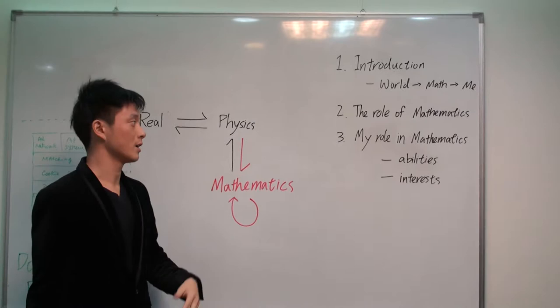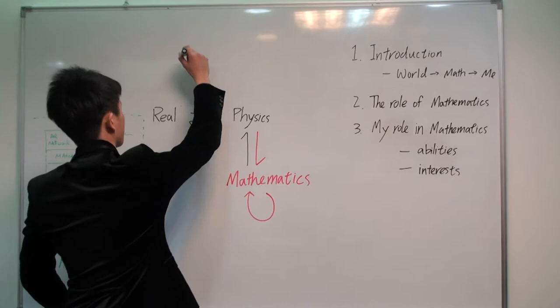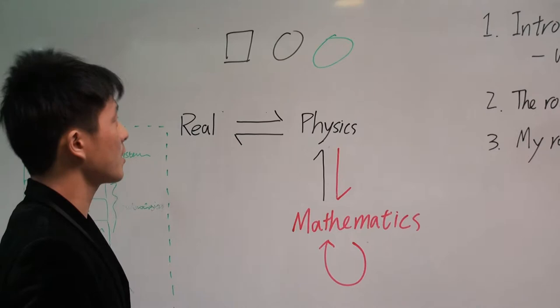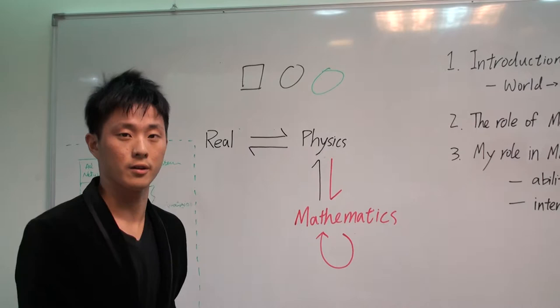So first, let's start with a really simple example. Obviously, these three objects are different. But at the same time, if we think about color, the two on the left are the same. Shape, the two on the right are the same.